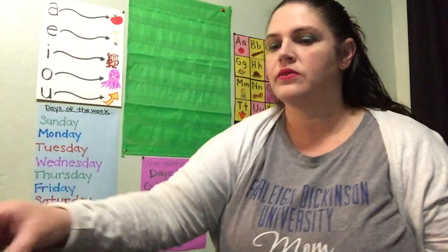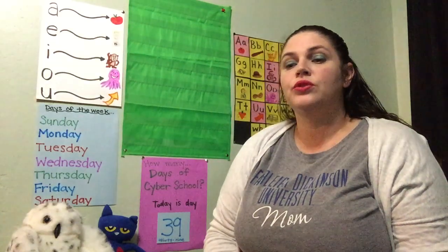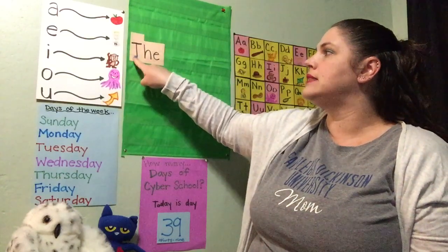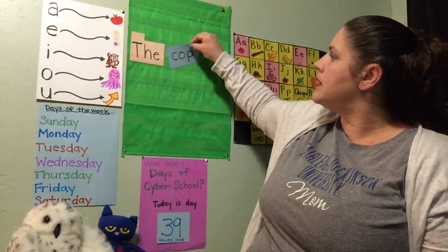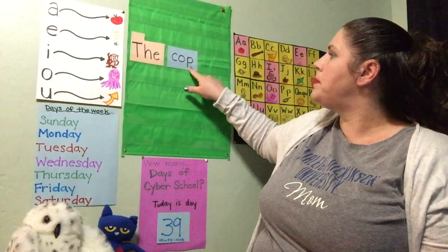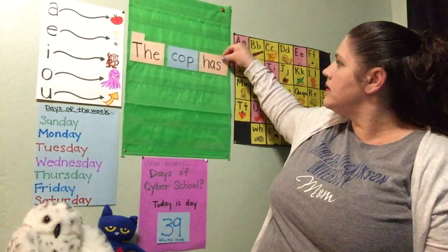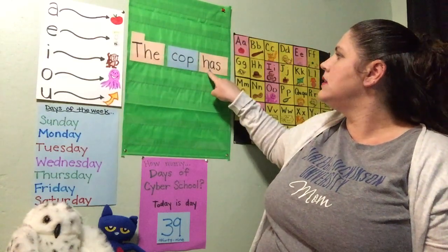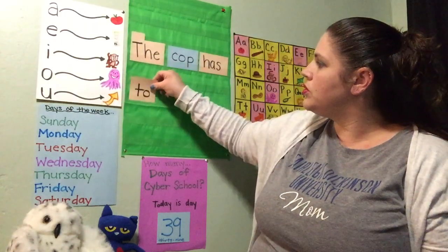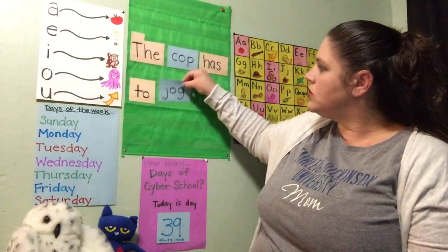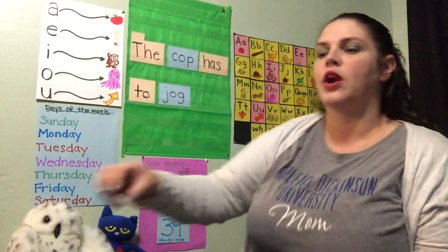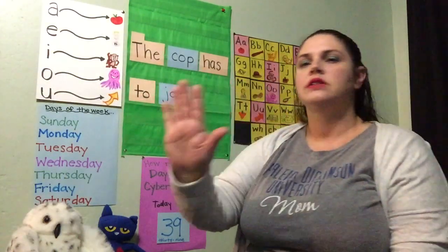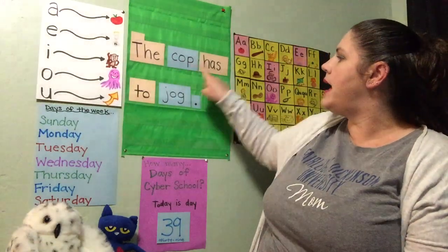We have one more sentence to write: "The cop has to jog." Starting with The again — uppercase T because it's the beginning of a sentence. The cop — C-O-P, cop. The cop has. We ran out of space, so we go down and to the left. To jog. The cop has to jog. We need punctuation at the end of our sentence to tell us to stop. Let's read that sentence one more time together: The cop has to jog.